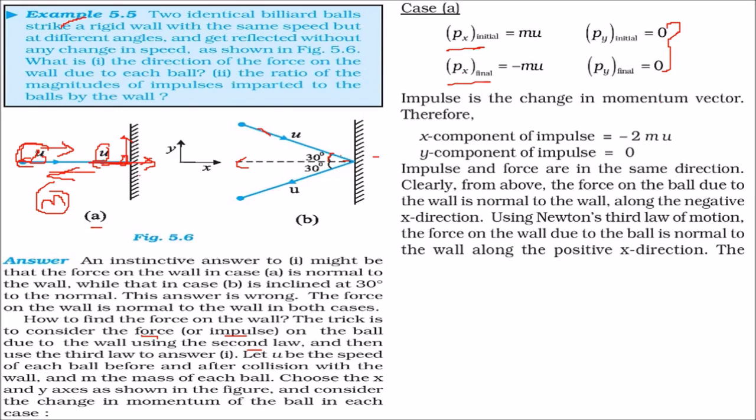Now, impulse is what? It is the change in the momentum vector. So MU, this is the resultant, minus MU, minus of MU. That is, minus of MU, minus MU. And that will give you minus 2 MU. And if you add these two, that will be 0. So y component will be 0.